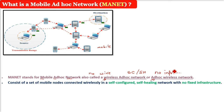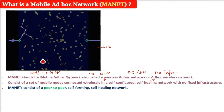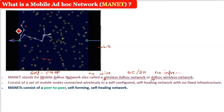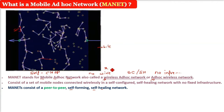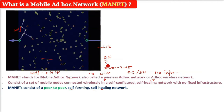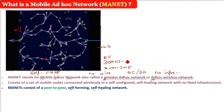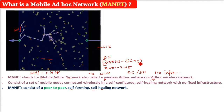MANET follows the self-hop property. MANETs consist of a peer-to-peer, self-forming, self-healing network. MANETs typically communicate at radio frequencies from 30 megahertz to 5 gigahertz. This is the frequency range for MANETs.